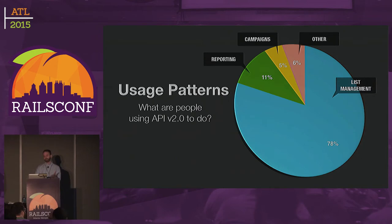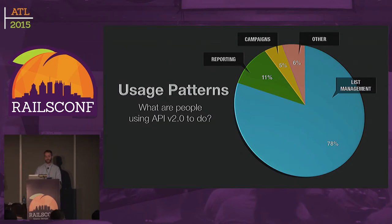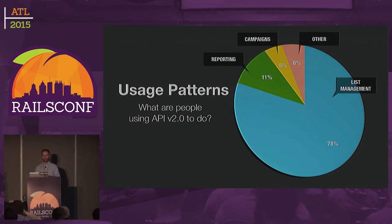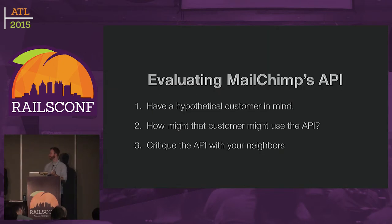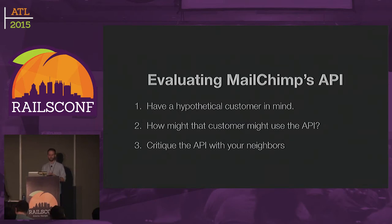About a week's worth of API calls to the version 2.0 API breaks down like this: the overwhelming majority is list management — getting people on the list, getting people off the list. Reporting is a close second. And then campaigns, which is probably the biggest thing MailChimp does — if we didn't have campaigns, what would we do? — almost nobody uses that through the API. So I have to ask myself: is that because that's just not something people want, or is it because our API is so bad that they can't?